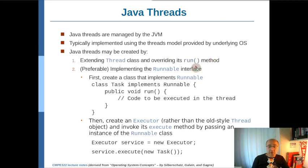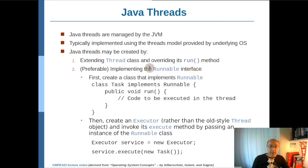Whatever you implement in this run method is the code that's being executed by the thread. For the second approach, which is the preferred approach, you implement the Runnable interface in a class.